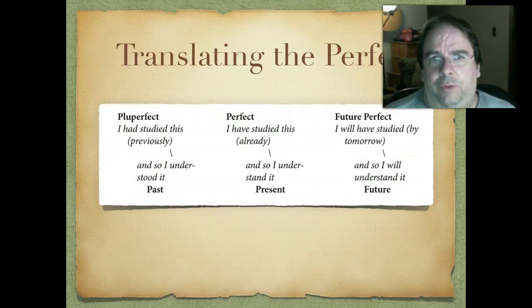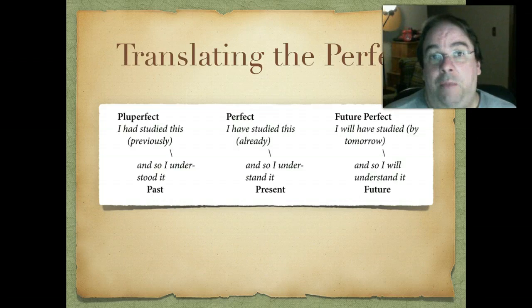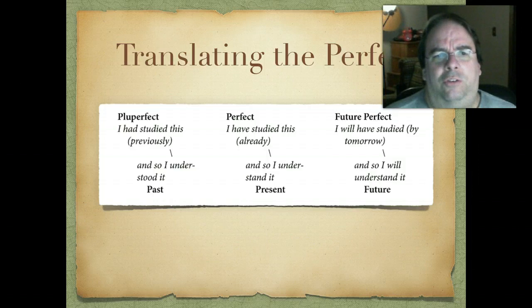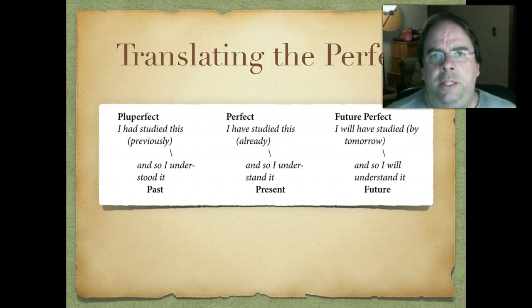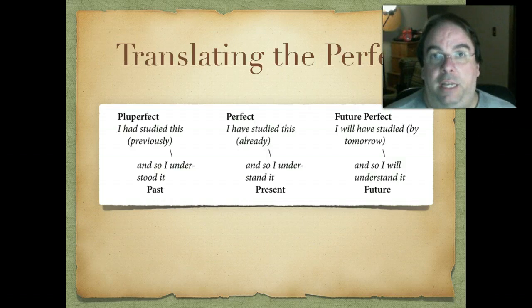So how can we translate these things? Since English doesn't have the precision that Latin does, we can play with it a little bit but we'll look at good ways to make this clear to English speakers. For the pluperfect: 'I had studied this previously, and I understood it' — implications for the distant past. For the perfect: 'I have studied this, so I understand it now' — implications on the present. For the future perfect: 'I will have studied by tomorrow, by the end of the semester, and so I will understand it' — implications into the future. I haven't done it yet, but I definitely will at some point.